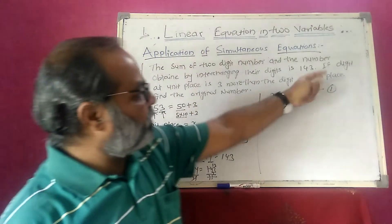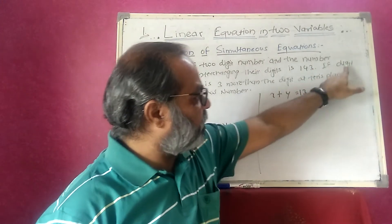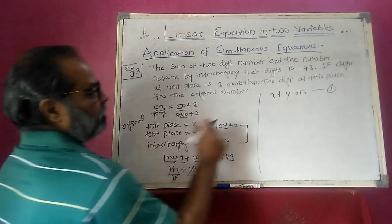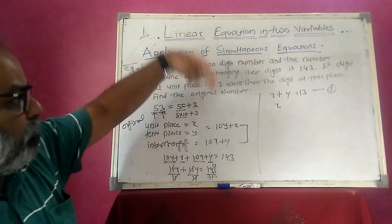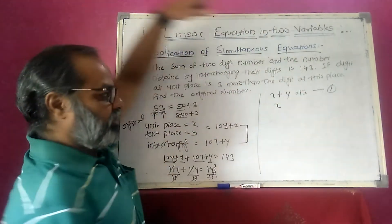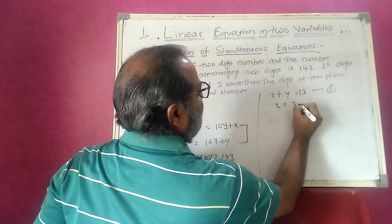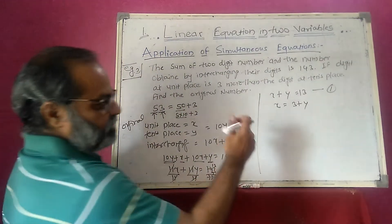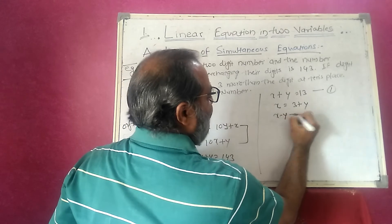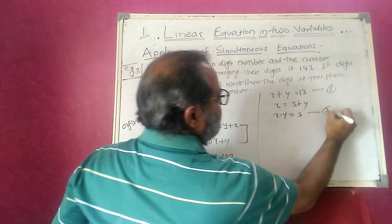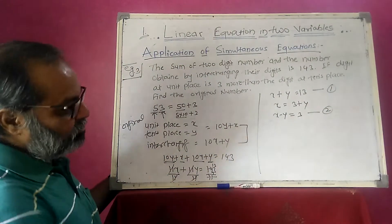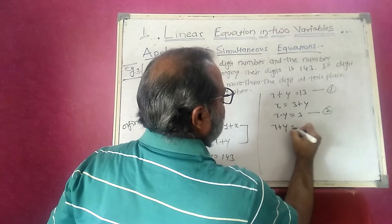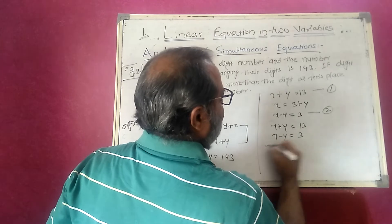The second equation comes from the condition that the digit at unit place is 3 more than the digit at tens place. So x equals y plus 3, which gives x minus y equals 3. This is equation 2. Now I solve the system: x plus y equals 13, and x minus y equals 3.